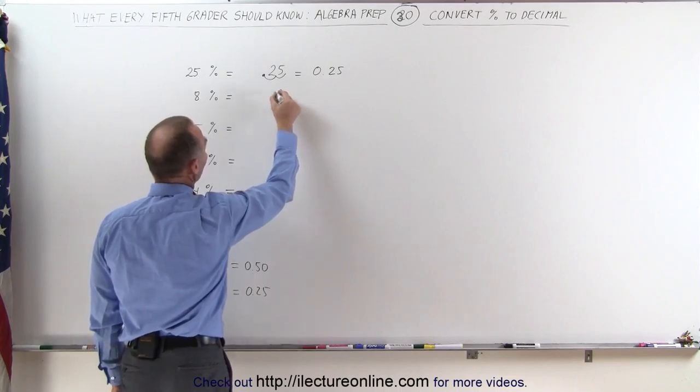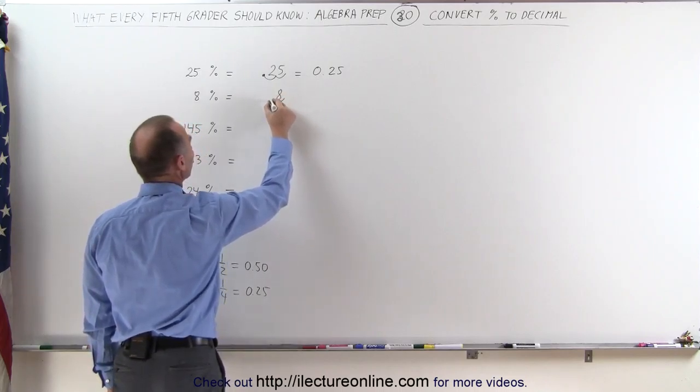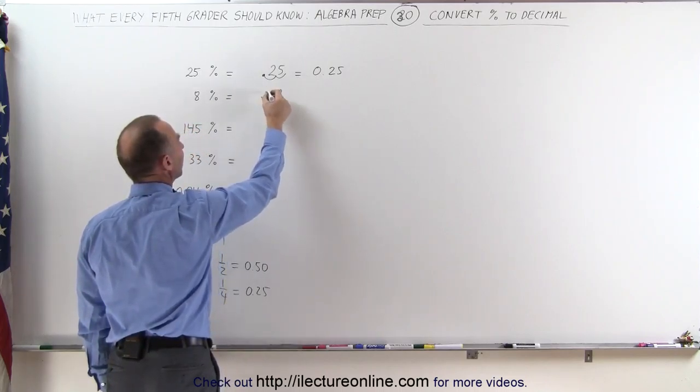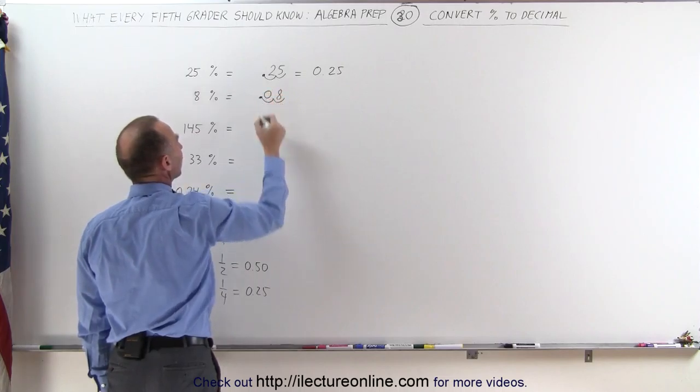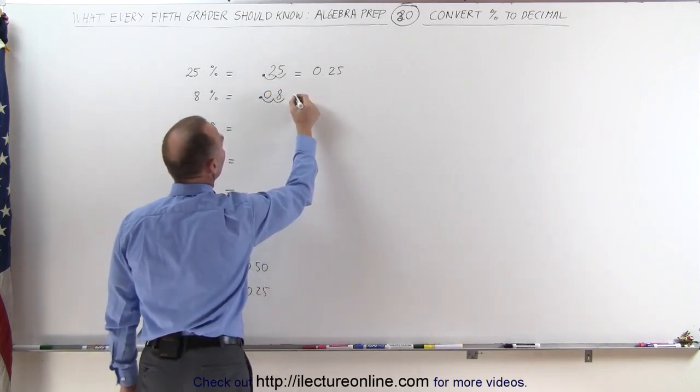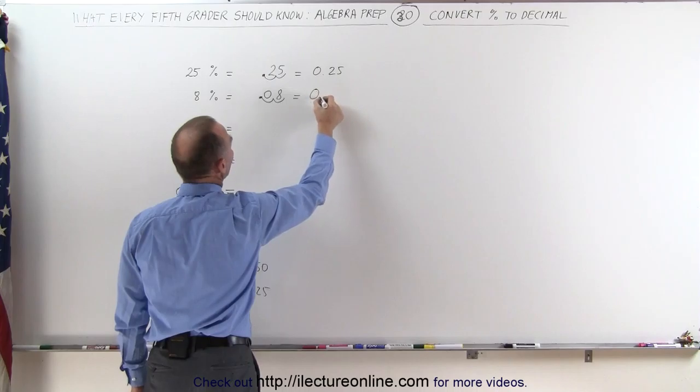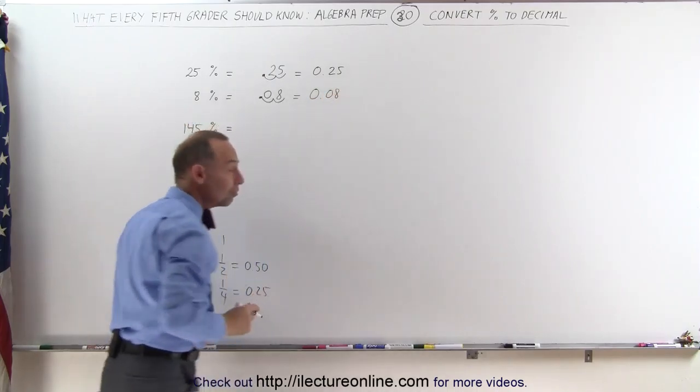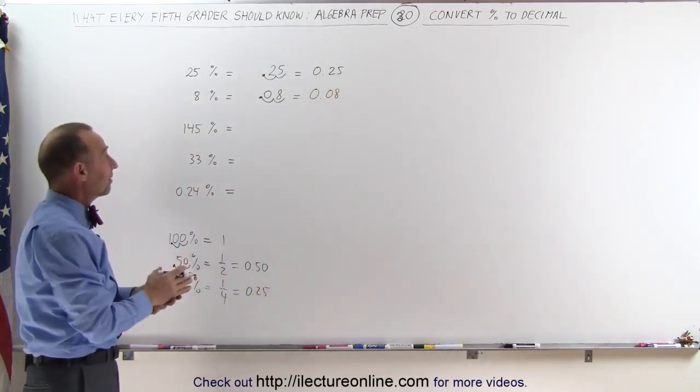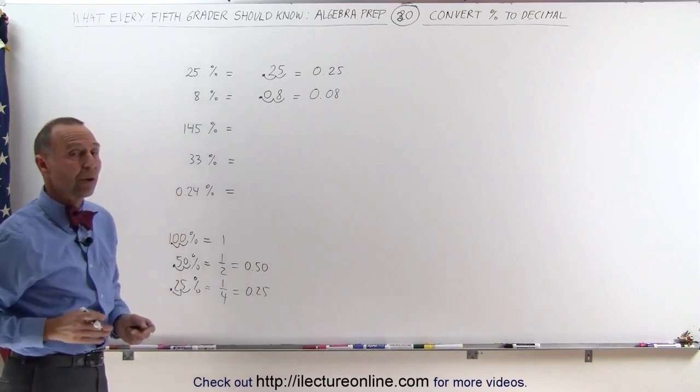8%, same thing. We write the number down. We move the decimal place over two spots. Since we don't have anything there, we put a zero there and a decimal point, and this therefore becomes 0.08, which means that 8% is the exact same thing as 0.08.